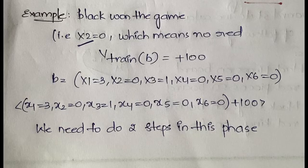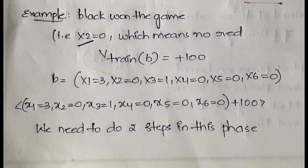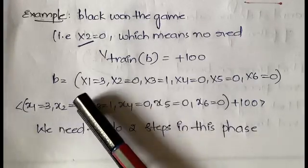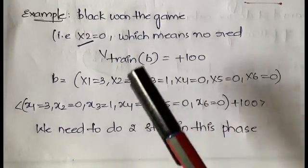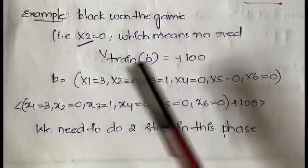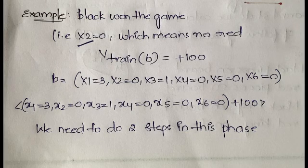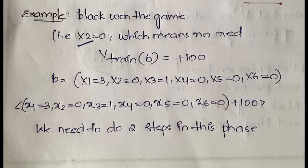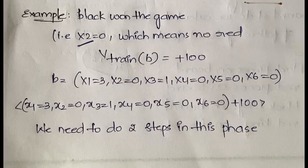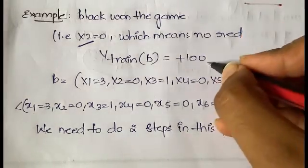x5 is also zero — x5 is the number of black pieces that can be beaten by red. Since there are no red pieces, there is no chance of beating black. x6 is also zero — x6 is the number of red pieces that can be beaten by black, but there are no red pieces on the board. So x1 equals three (number of black pieces), x3 equals one (number of black kings), and x2, x4, x5, x6 are all zero.